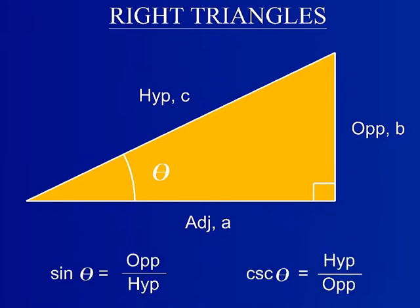The first set of trigonometry functions to be demonstrated are sine and cosecant. The sine function is the ratio of the length of the side opposite the angle of interest, b, over the hypotenuse. The cosecant function is the reciprocal of the sine function, meaning that cosecant is equal to 1 divided by the sine function.